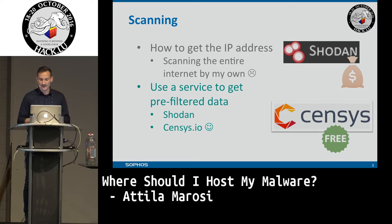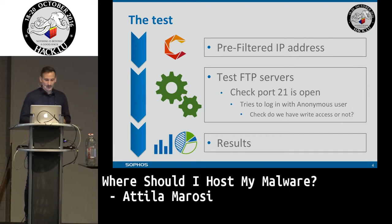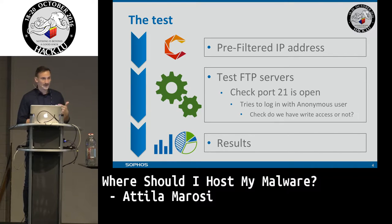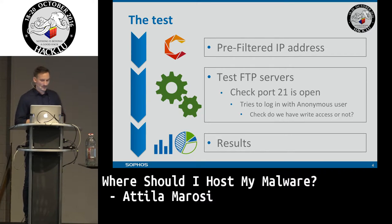In this research, I use Censys to get a good hint about the device and the IP address. How could a process look like that gets pre-filtered data from one of the servers? I use Censys, then do the test. In this case, I test the FTP servers to check if port 21 is open and try to log in with anonymous users. If I could, it tries to write to disk and test whether we have write access, which is not very good. Then we get the results and analyze them.